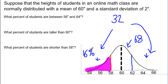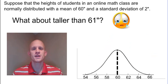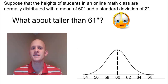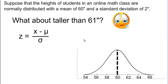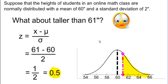What about the percent of students taller than 61 inches? We try to use the empirical rule, but 61 falls between one standard deviation from the mean, so the empirical rule doesn't work in this case. What we need to do is standardize our heights using the z-score formula: z equals x minus mu divided by sigma. Here, x is 61 inches, mu is 60, and sigma is 2. Our z-score is (61 minus 60) divided by 2, which equals one-half or 0.5. This means that 61 inches falls half a standard deviation above the mean.